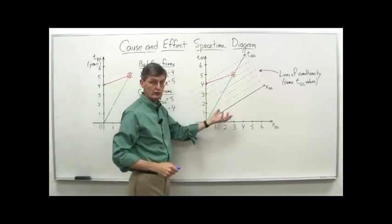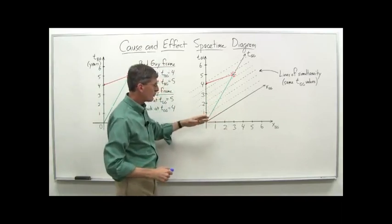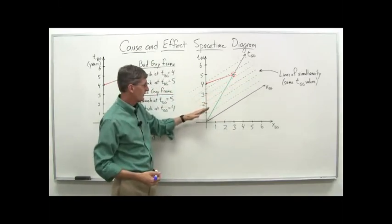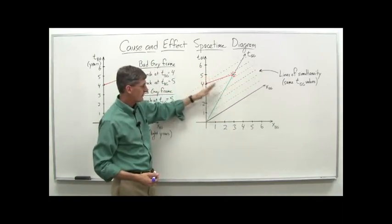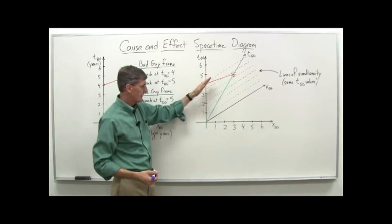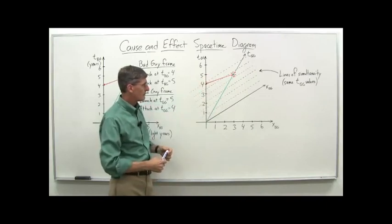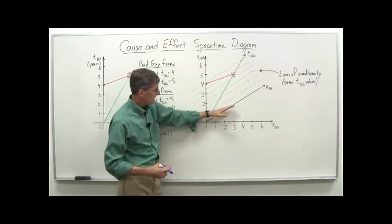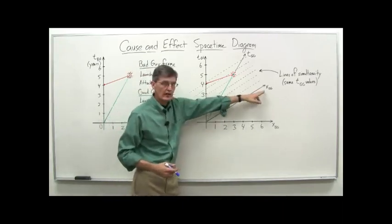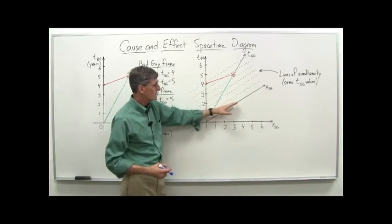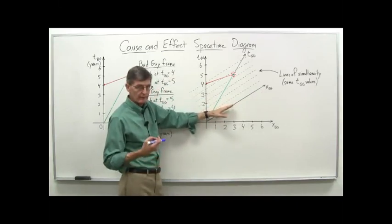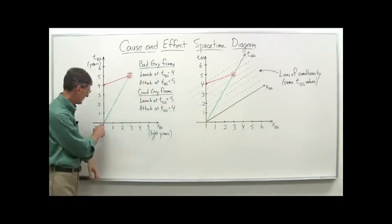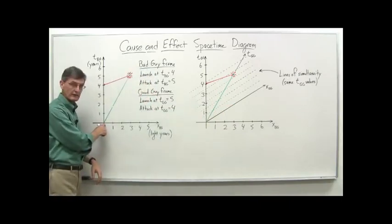When we have the skewed axes, everything that's going on at a given time is a line parallel to the x-axis. And so I've drawn in a number of these lines here. So they're just all parallel to the x-axis. And if we analyze this, just to be clear here, the xgg axis is all events when tgg equals 0. In the good guy's frame, that happens at t equals 0. And note, that's when they set off from the planet. We define that as our origin point.